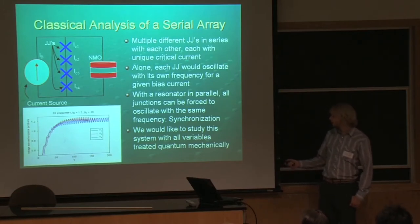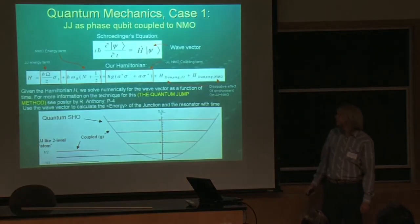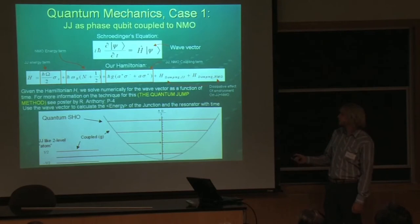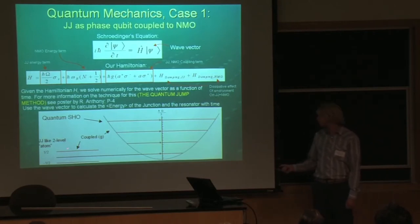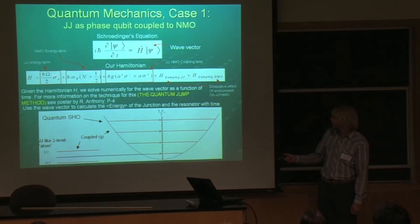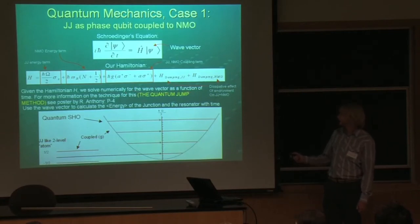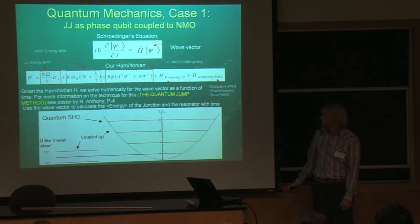However, one thing we'd like to do is study this system with all variables treated quantum mechanically. Moving on to some quantum mechanics: we studied one case where we have the Josephson junction coupled to the oscillator acting as a phase qubit, which means it has just two energy states — it could be in the higher or lower one. The oscillator is kind of like a quantum simple harmonic oscillator with equally spaced energy levels. This is the Hamiltonian for this system, where we have an energy term for the junction, an energy term for the oscillator, a coupling term, and damping terms, which are dissipative effects of the environment. Given this Hamiltonian, we have a numerical method where we can solve for the wave vector as a function of time.